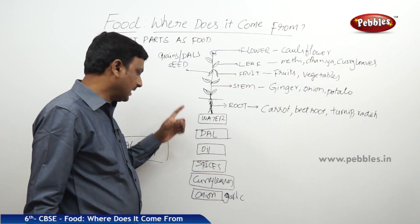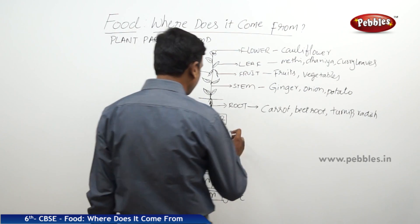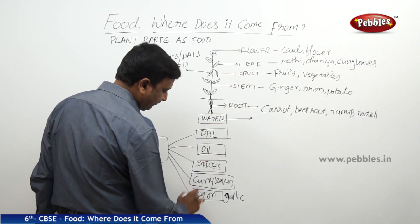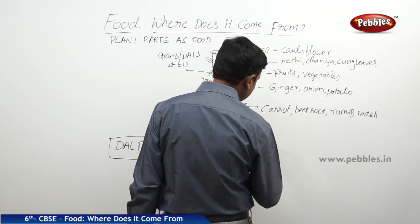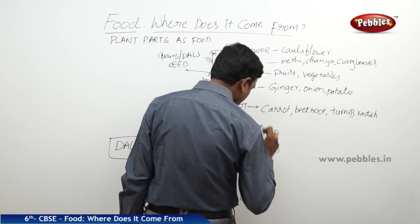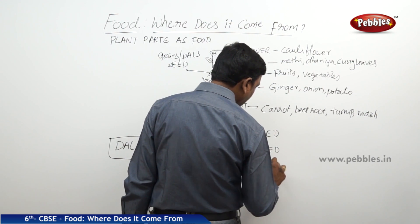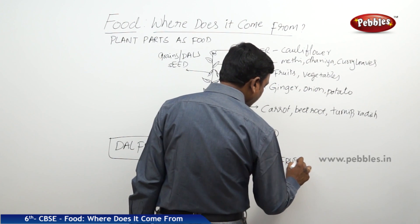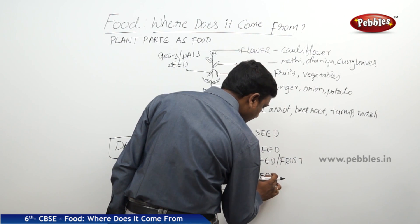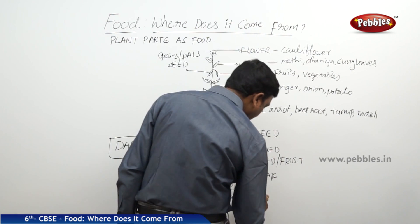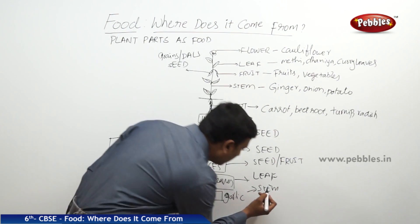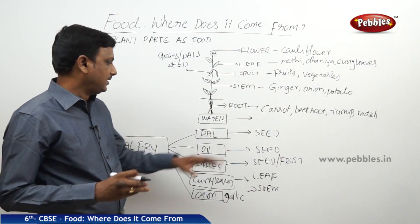Now let us see what part of the plant each ingredient comes from. Dal fry is made up of these items: dal — seed of the plant; oil — it comes from the seed of the plant; spices — they come from the seed or fruit of the plant; curry leaves — leaf of the plant; onion — stem of the plant. So dal fry uses many different parts of the plant.